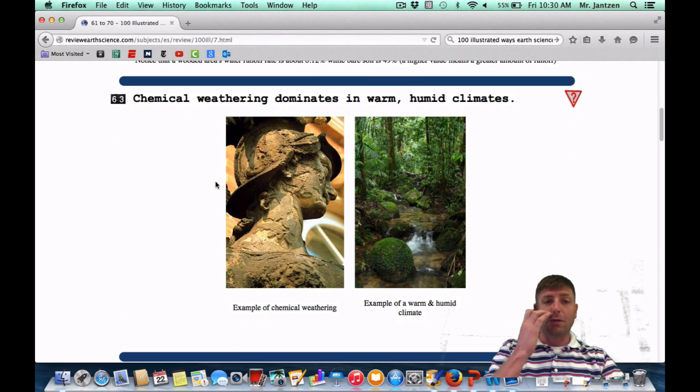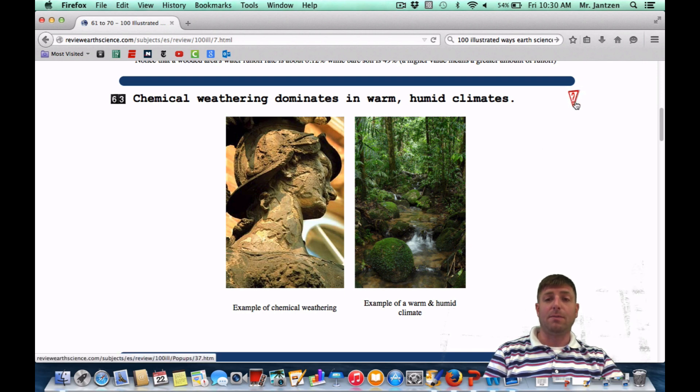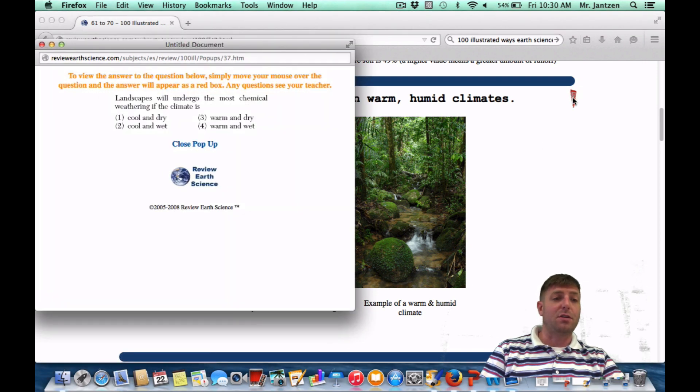Number 63: Chemical weathering dominates in warm, humid climates. Chemical weathering, warm and wet. You want those conditions for the chemical reactions to occur. So you want to memorize chemical is warm and wet, or warm and humid, however you want to phrase it. As a regions question, it says the landscape will undergo the most chemical weathering if the climate is what? Once again, warm and wet, or choice four.